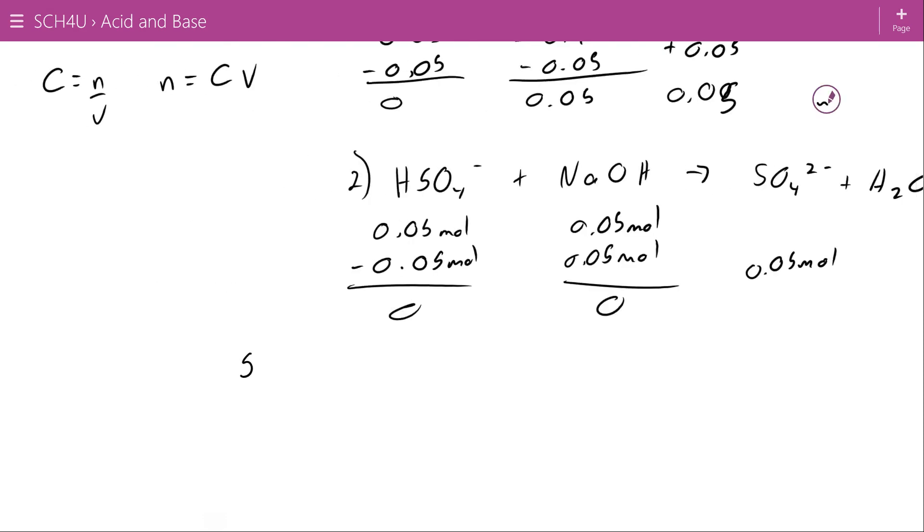What that means is that this will react away completely, and so will this, leaving me with zero HSO4 minus and zero NaOH and creating 0.05 molar SO4 2-. SO4 2- is the conjugate of HSO4 minus. So if this is a weak acid, this is a weak base. That means when it reacts with water it's a proton acceptor, forming HSO4 minus and OH minus and increasing the hydroxide population.